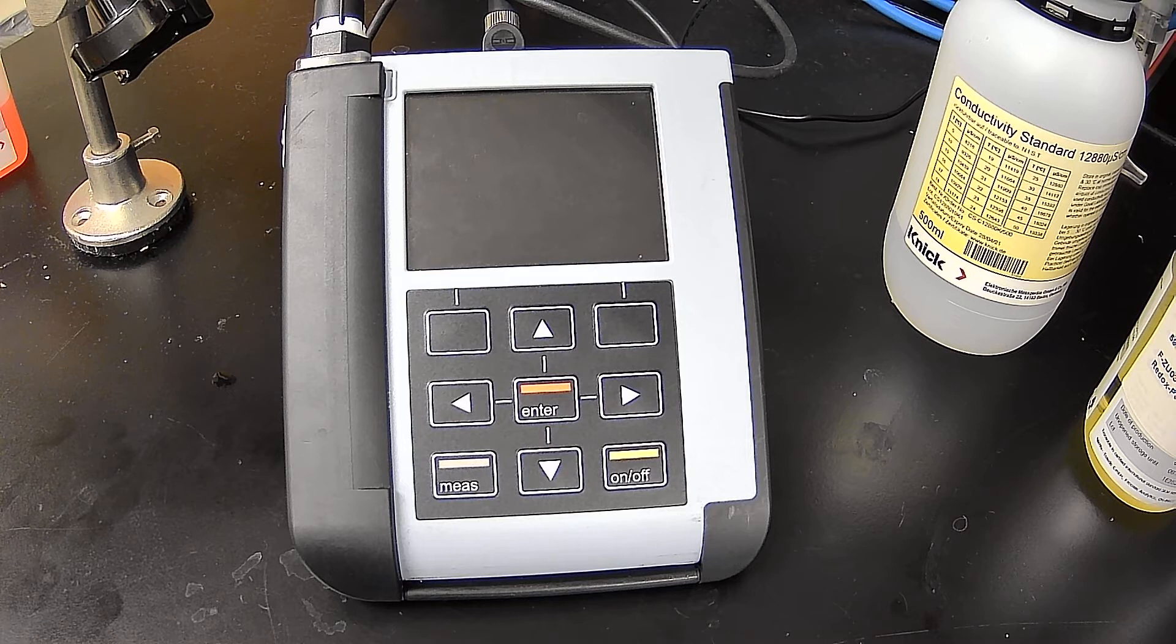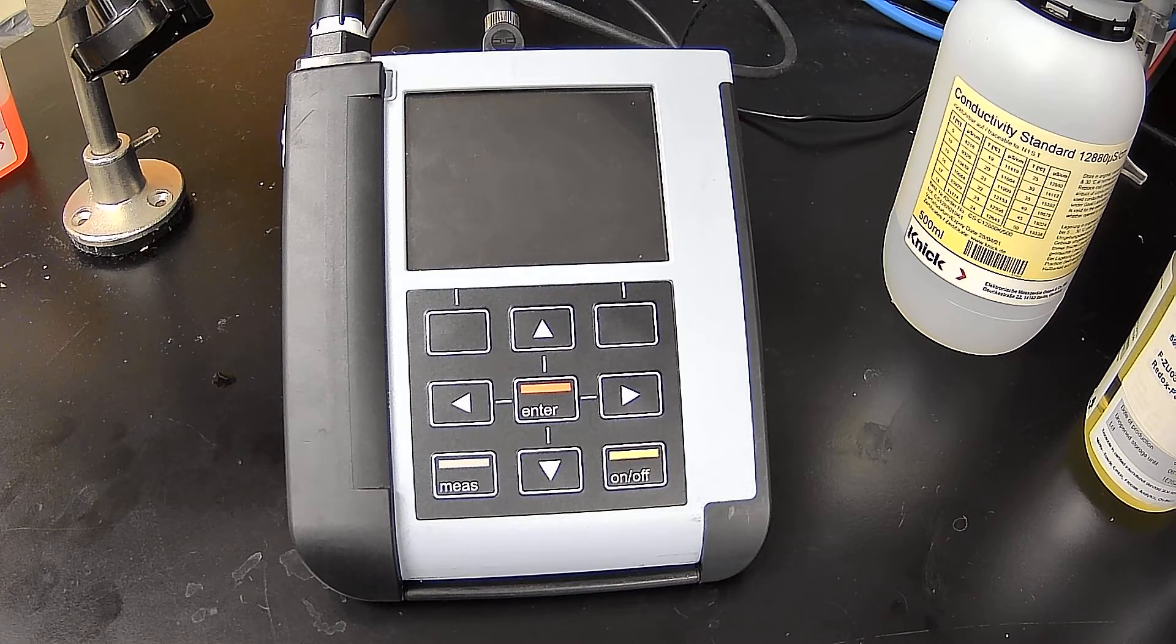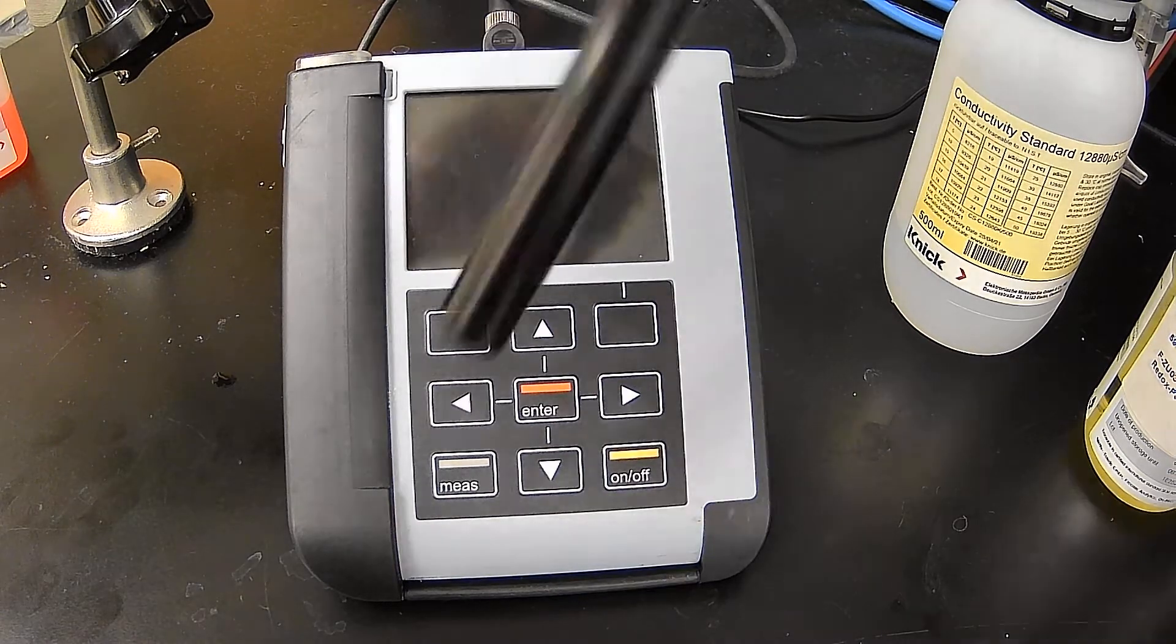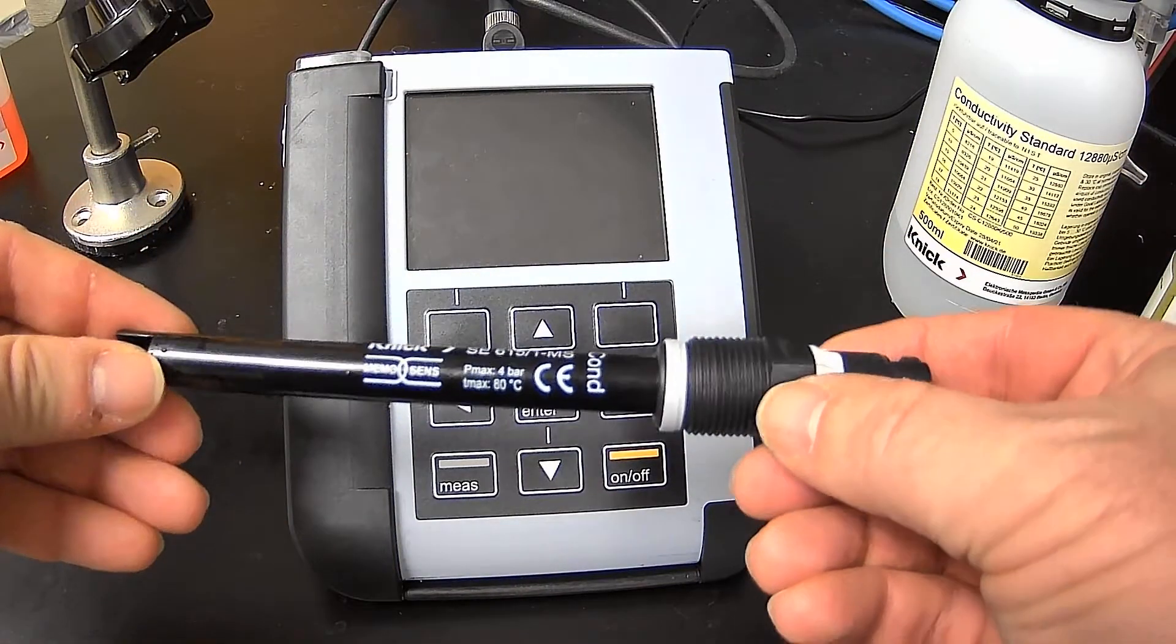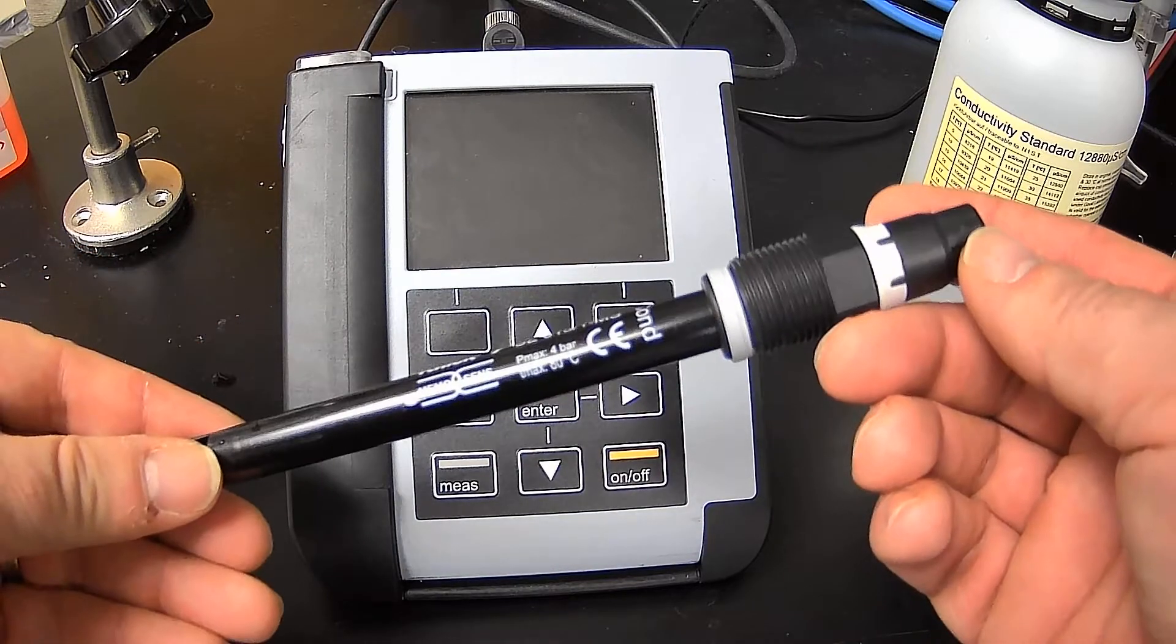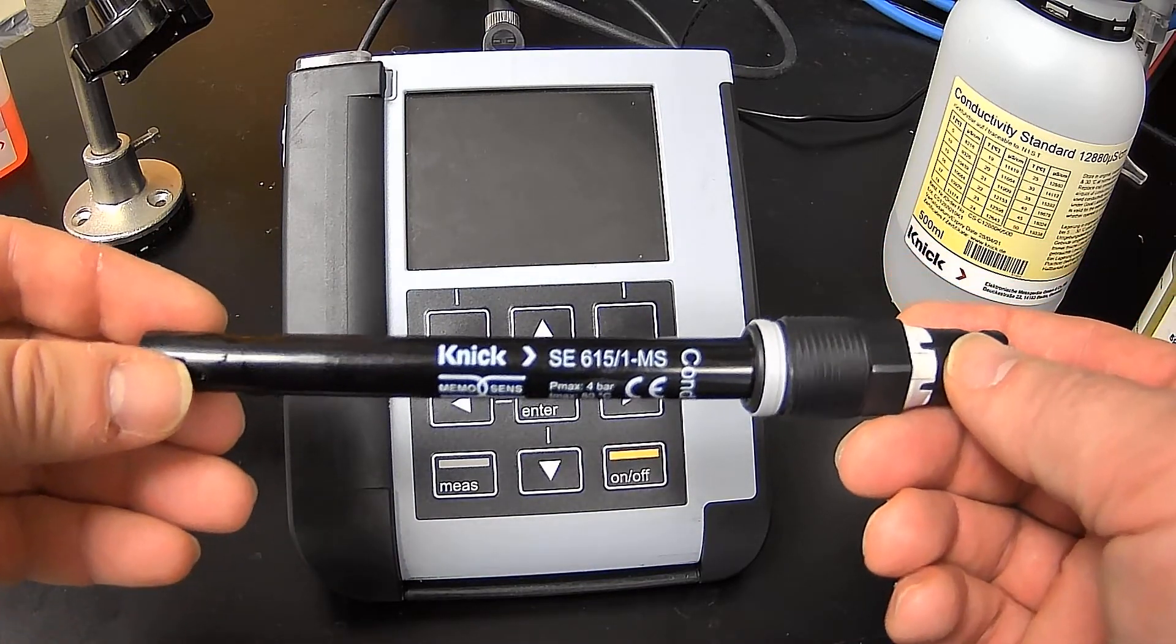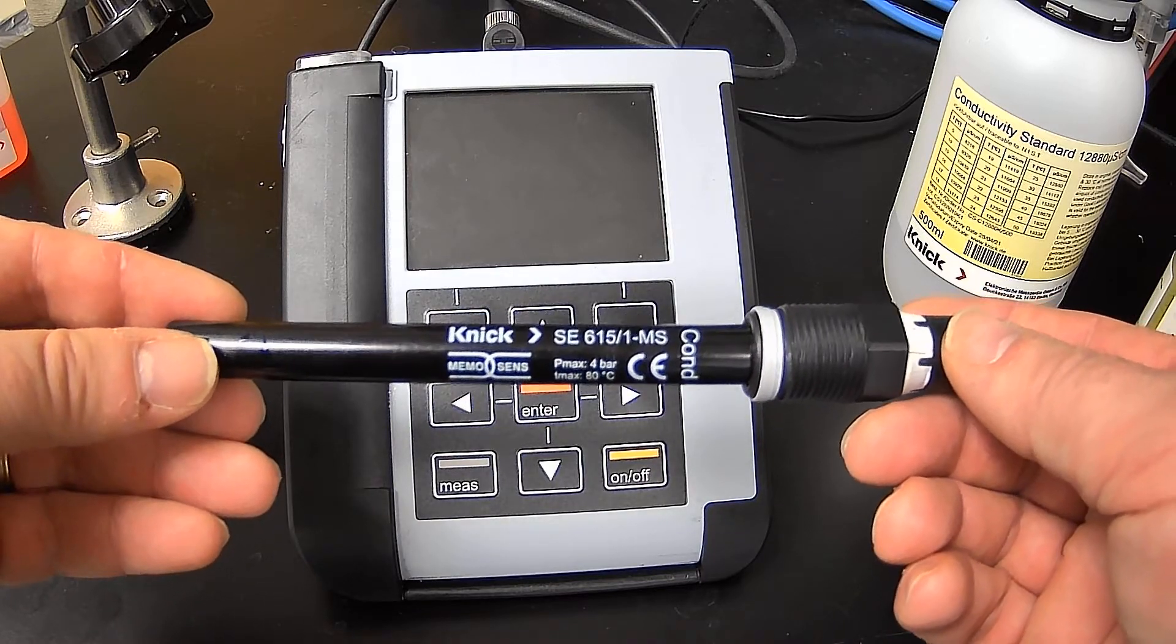This conductivity electrode is very straightforward. I'll show you what it looks like here. We've got a PG 13.5, it's memo sense with an inductive connection, and it's called an SE615.